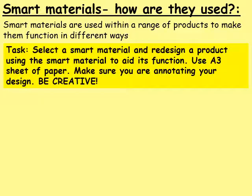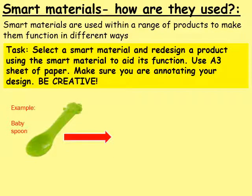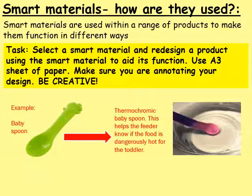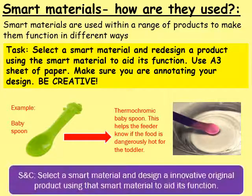An example of this is a normal everyday baby spoon. What you might do is use a thermochromic pigment on that baby spoon to help parents decide how hot the food is and whether it's too dangerous for a toddler or baby to eat from that spoon. If that's a little too easy and you want to challenge yourself more: can you select a smart material and design an innovative, original product that doesn't already exist, using that material to aid its function?